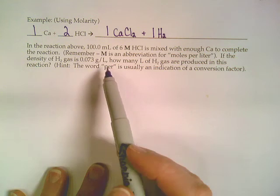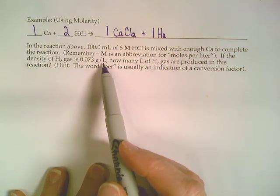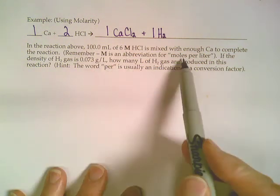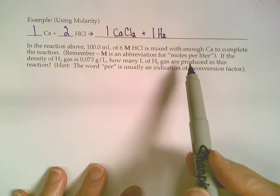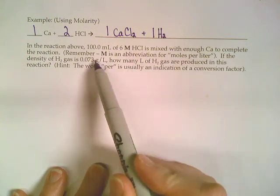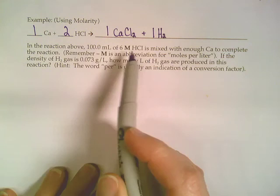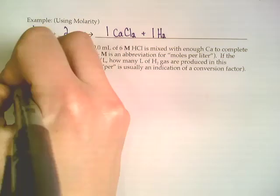You want to start with simple units. This is grams per liter, the capital M stands for moles per liter, so we don't want to start with either one of these numbers—the units are complicated. We're going to start with that 100 milliliters.